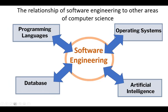Next, the relationship to other areas of computer science. Software engineering has emerged as an important field within computer science, so there is a relationship between software engineering and other areas in computer science. These areas both influence and get influenced by software engineering.